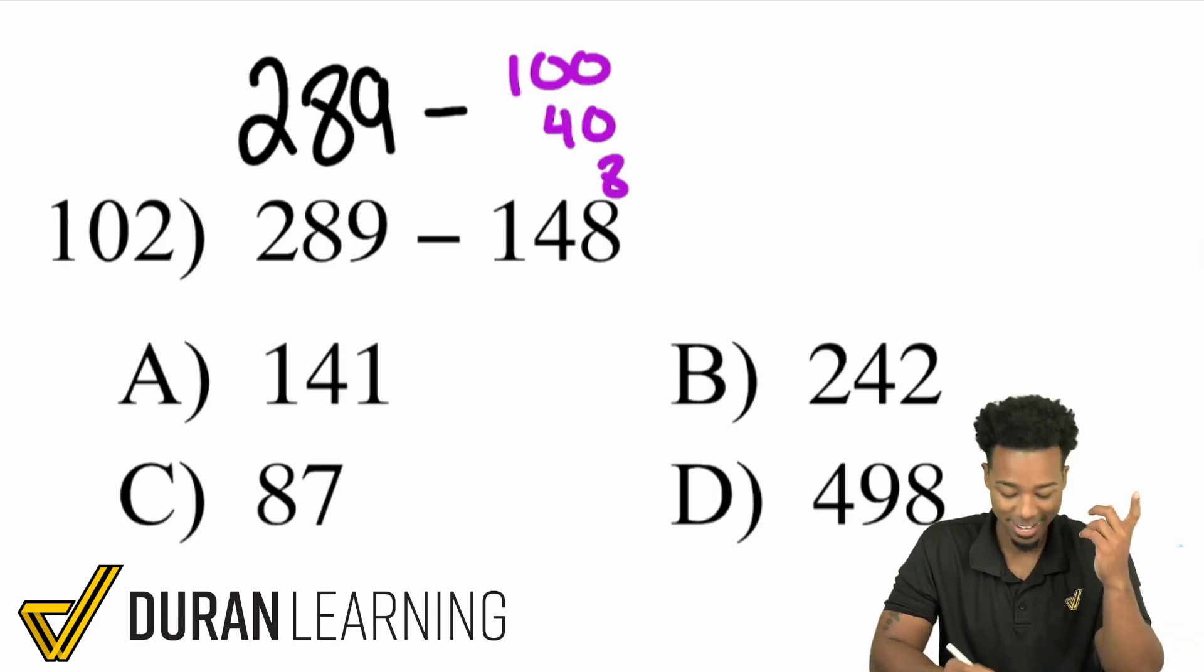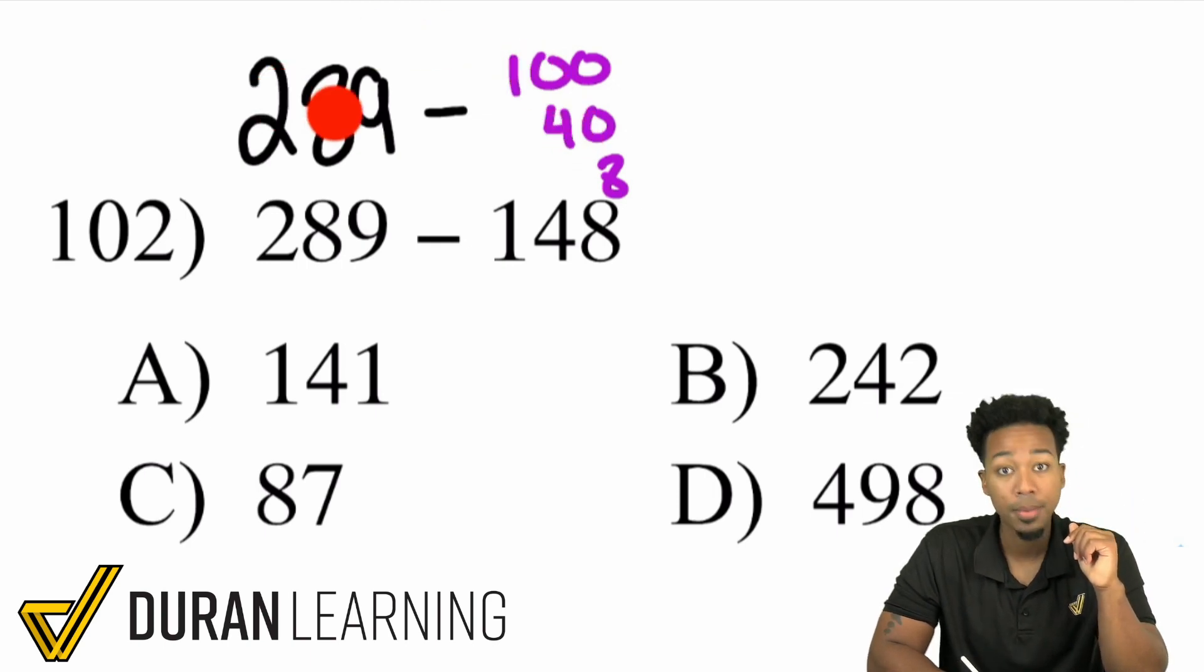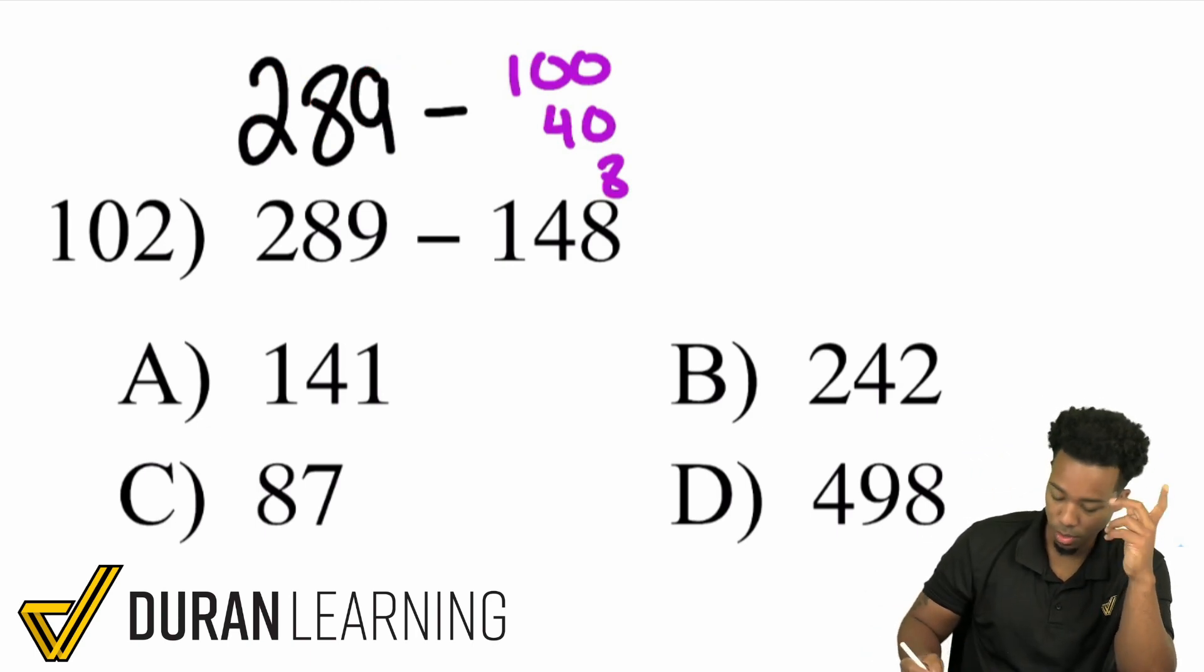And you can get that done in your head because you can say minus 100 189 minus 40 159 take away 8 151 or 141. Excuse me there. That was an 8 not a 9.